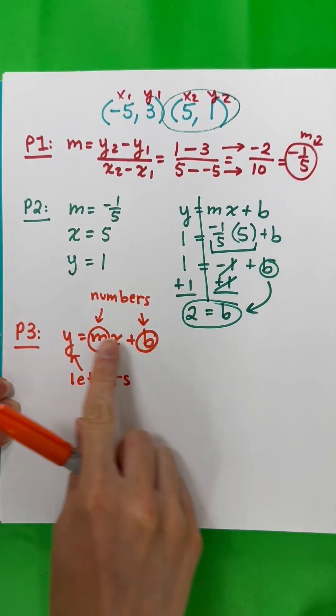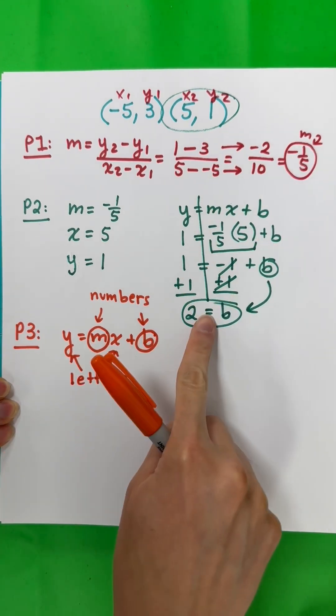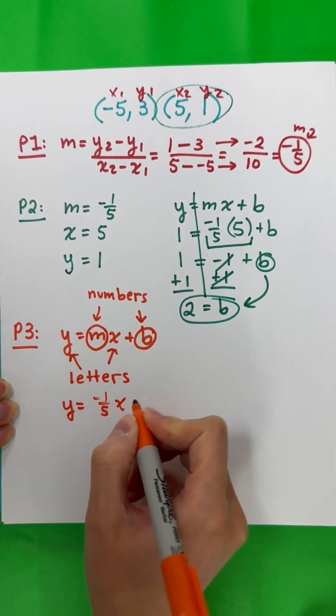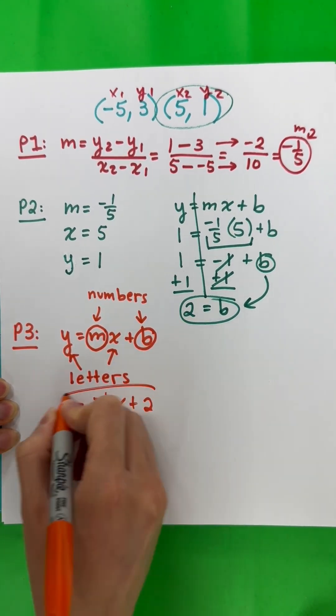B equals 2. You're going to write it in slope-intercept form: Y equals MX plus B, where M and B are the numbers and Y and X are letters. So Y equals, M is negative 1 fifth, X, plus, B is 2. That's your final answer.